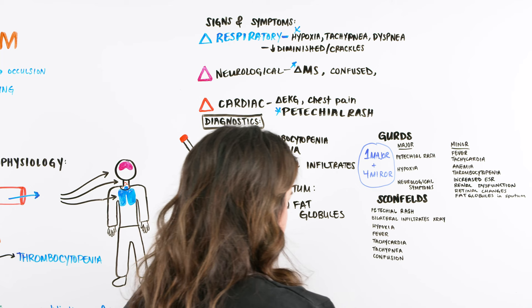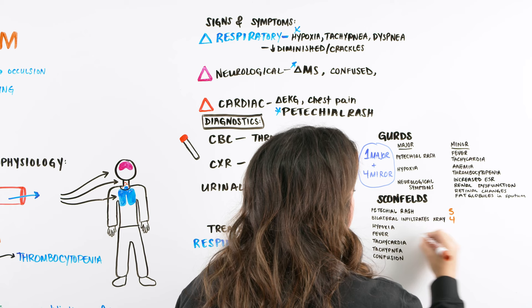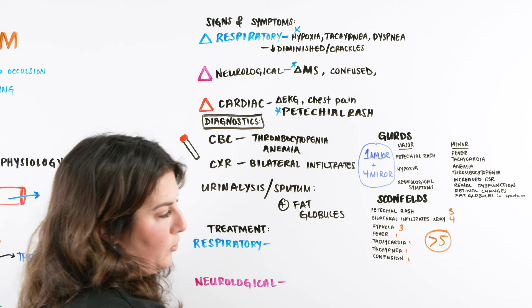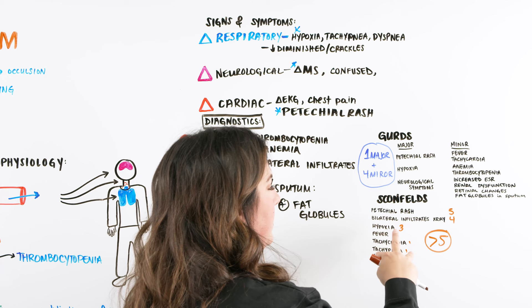The other criteria is Schonfeld, which is just a point system. They have all these symptoms each assigned a point value — five, four, three, one, one, one, one — and the criteria is if a patient scores greater than five, they meet the criteria for fat embolism. So if they have a petechial rash and tachypnea, we're thinking this patient probably has a fat embolism. But there are many different criteria to look at along with each patient because it's case by case.